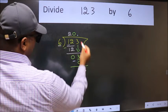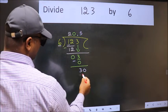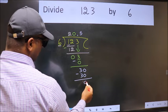When do we get 30 in the 6 table? 6 times 5 is 30. Now we subtract. We get 0.